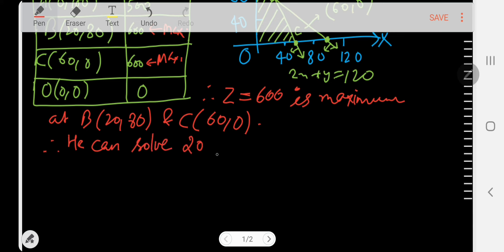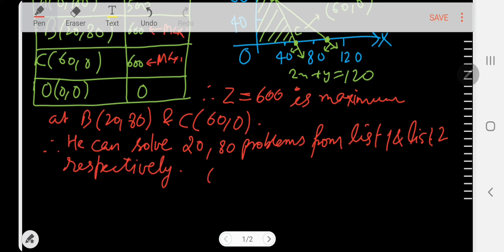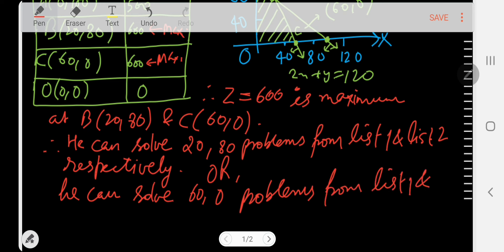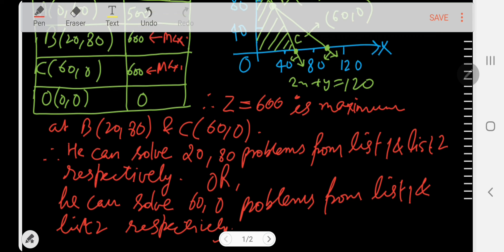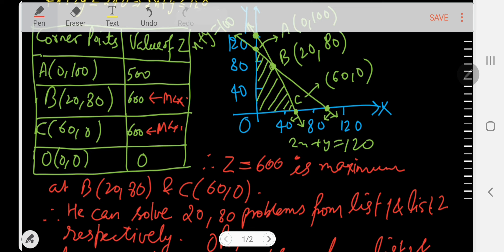Z is maximum at B(20,80) and C(60,0), which further means he can solve 20 and 80 problems from List 1 and List 2 respectively, or he can solve 60 and 0 problems from List 1 and List 2 respectively.